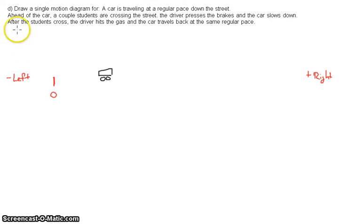The next step will be to represent this as a motion diagram. So the car is traveling at a regular pace down the street so we're going to represent that with arrows of roughly the same length. I apologize if my handwriting is terrible here. This is V1, V2, and V3.